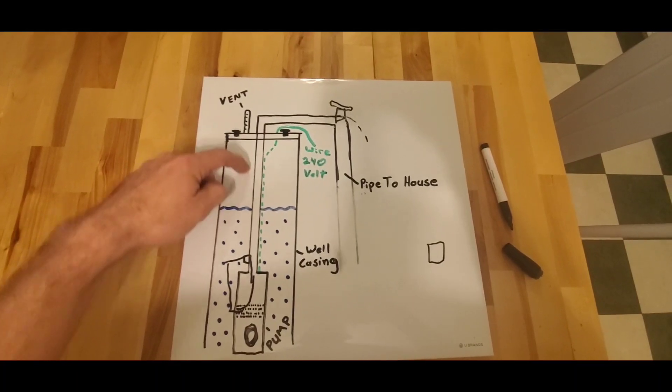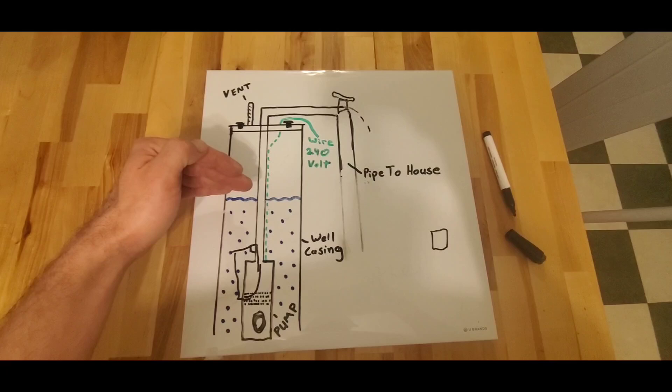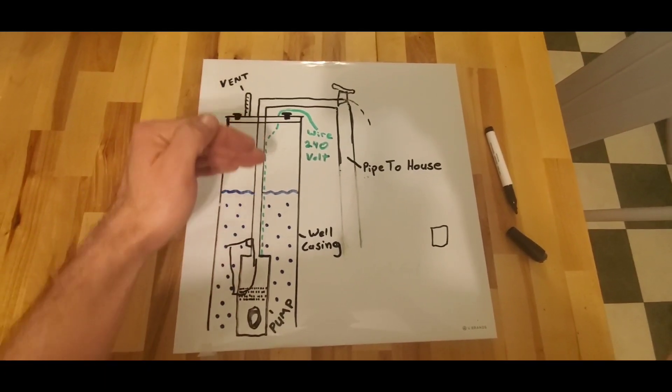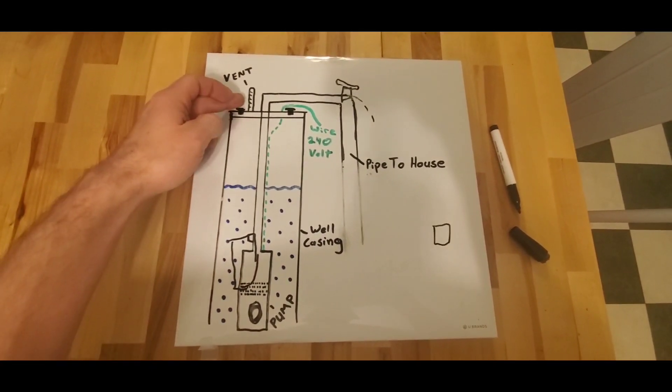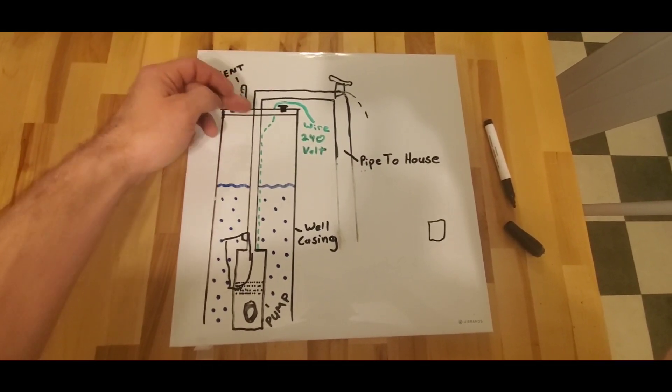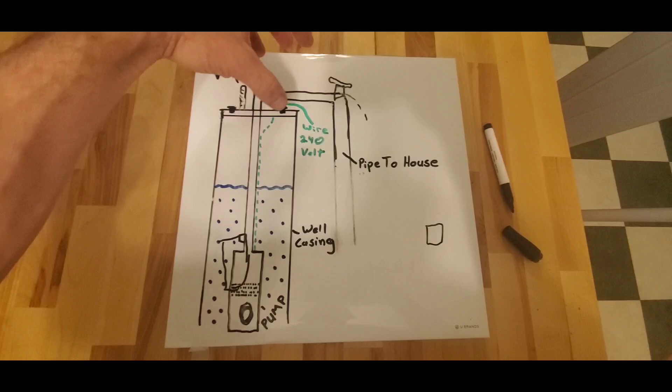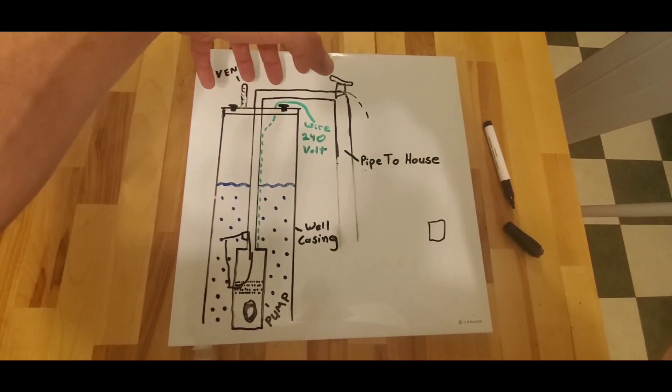As in turn, the air pocket above it is going to be 55 degrees. So as you use water in your house and the water goes up and down, it's actually breathing air in and out of the vent from the area above the static level.